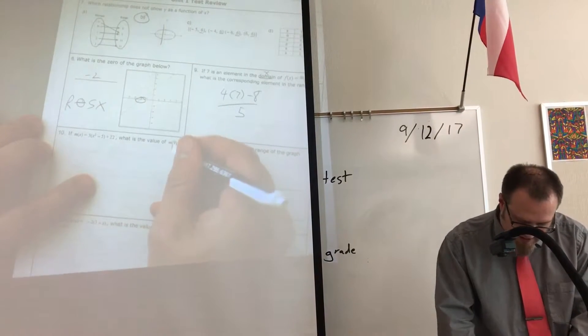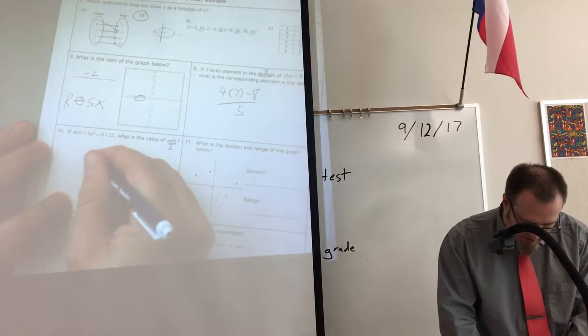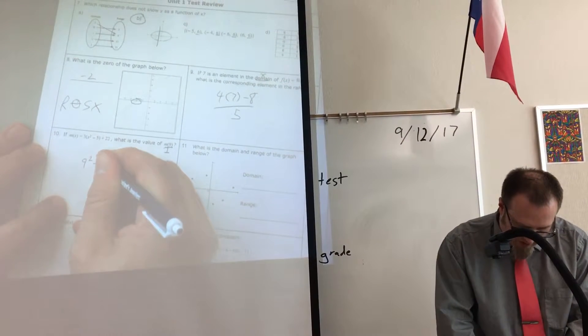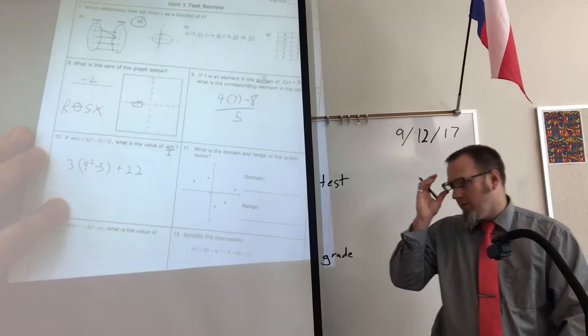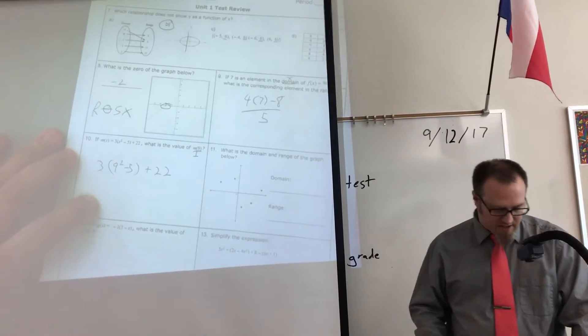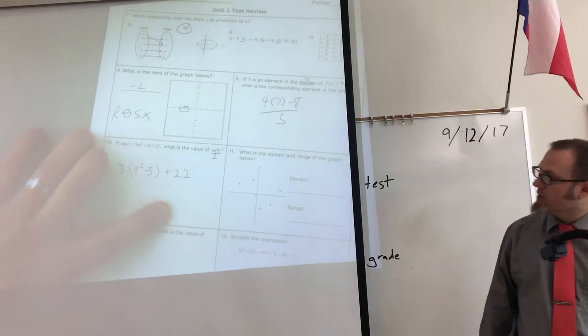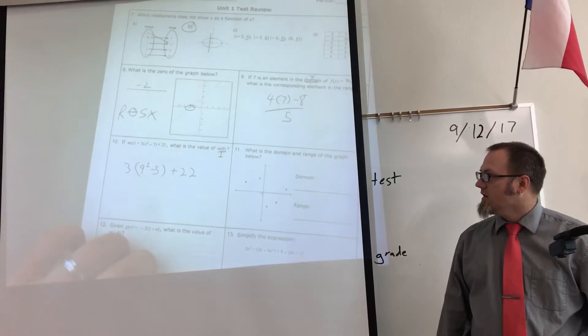The value of M9, this is an input again. So 9 squared minus 5 times 3 plus 22. This would be 81 minus 5. That's 76 times 3. This is going to be a really big number. Just type it in the calculator, get the correct answer.